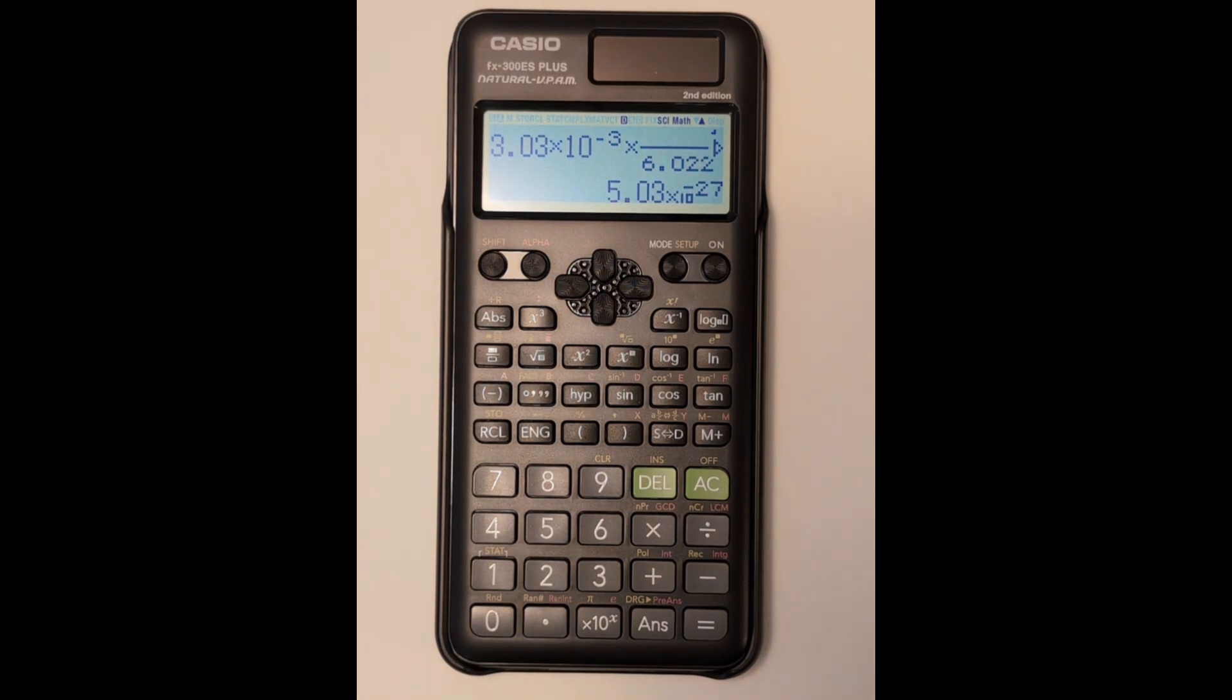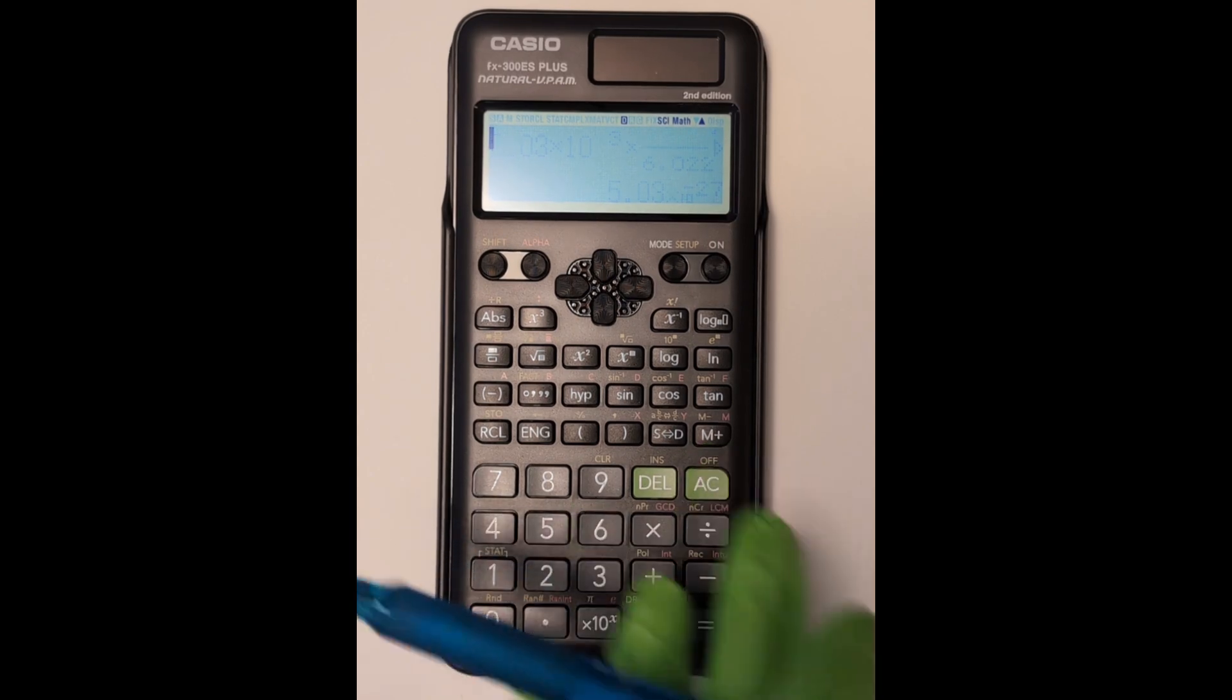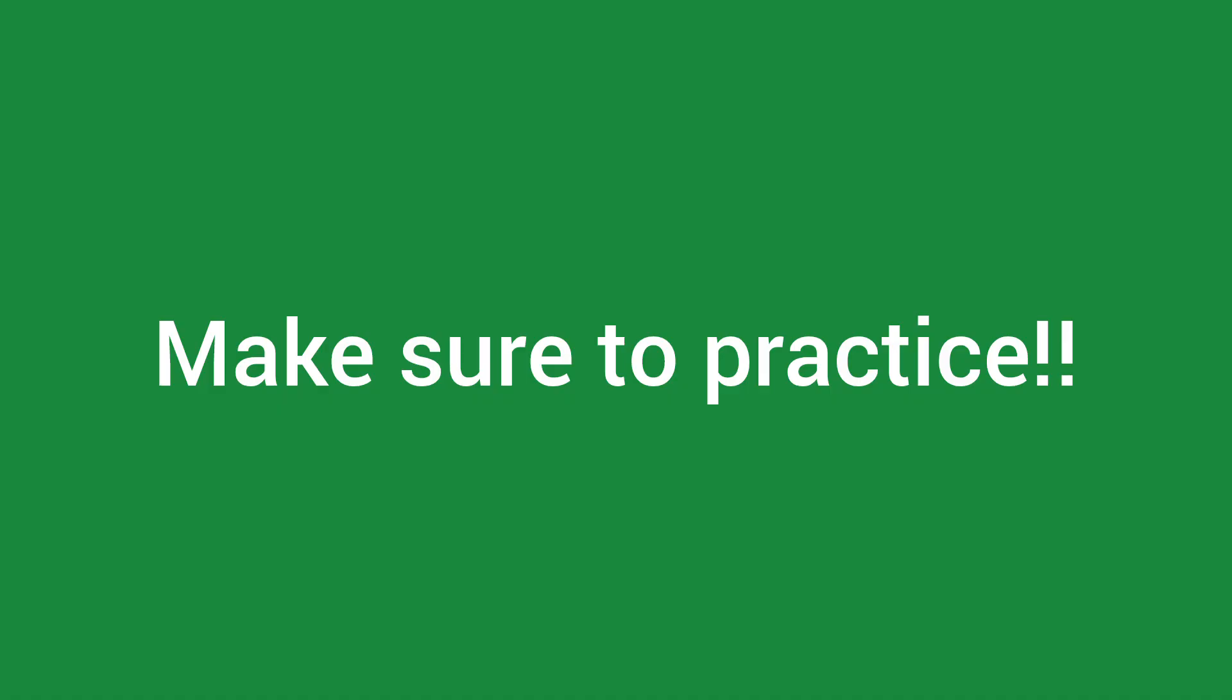and there is my answer. Again, it is showing with three sig figs because I had left it in the three sig fig mode. Remember to turn it back into normal mode like I showed earlier, and most importantly, make sure to practice. You need to do this over and over again until you don't have to think about it.